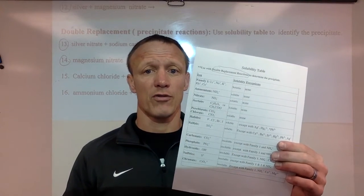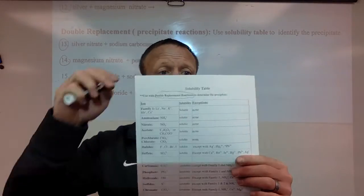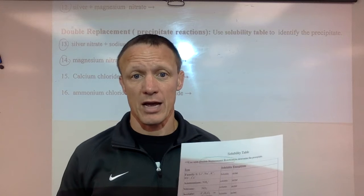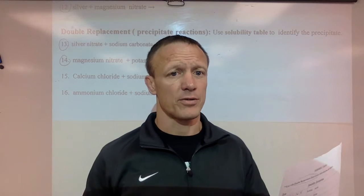We need to use our solubility table here for doubles to predict the precipitate. So we're trying to figure out what is the insoluble thing. The precipitate is the insoluble thing that will not dissolve that's made in the reaction.